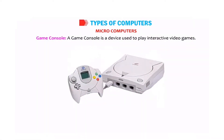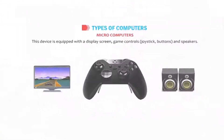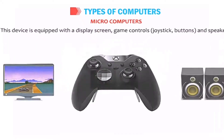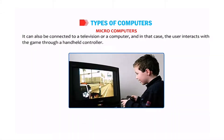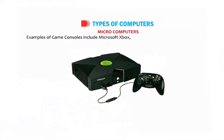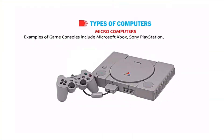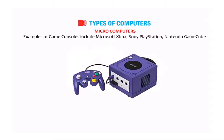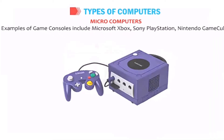A game console is a device used to play interactive video games. It comes along with a display screen, game controls such as a joystick and buttons, and speakers. It can be connected to a television or a computer, in which case the user interacts with the game through a handheld controller. Examples of game consoles include Microsoft Xbox, Sony PlayStation, Nintendo GameCube, and Nintendo Wii.